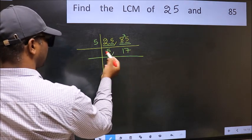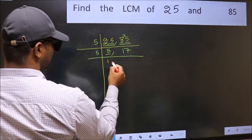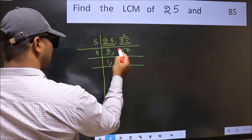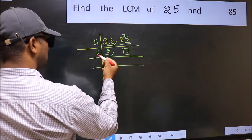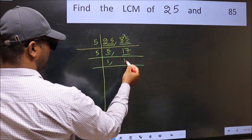Now, here we have 5. 5 is a prime number, so 5 once is 5. The other number, 17, is not divisible by 5, so you write it down as it is.